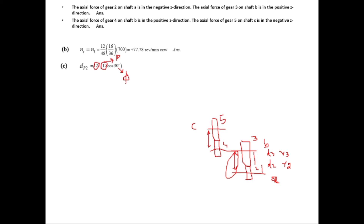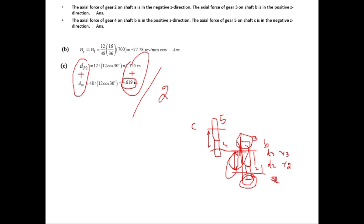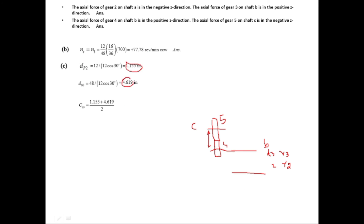For gear 2: N = 12, P = 12, and ψ = 30 degrees. Substituting into D = N / (P × cos ψ) gives D2 = 1.155 inches. For gear 3: the helix angle and pitch are the same, only the teeth count changes to 48, giving D3 = 4.619 inches. Summing D2 and D3 and dividing by 2 gives the center distance between shafts A and B as 2.887 inches.